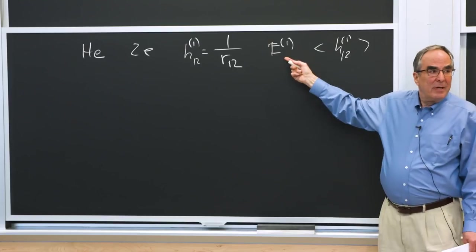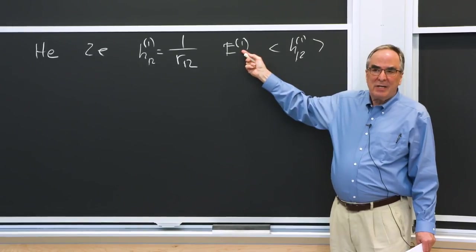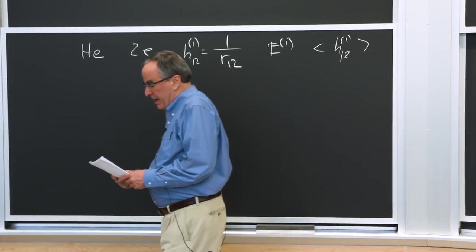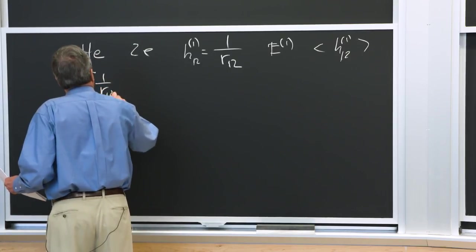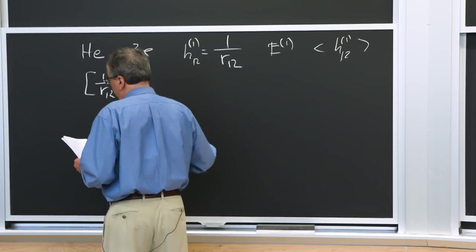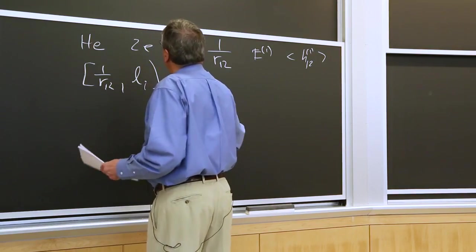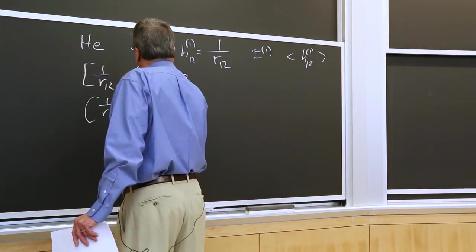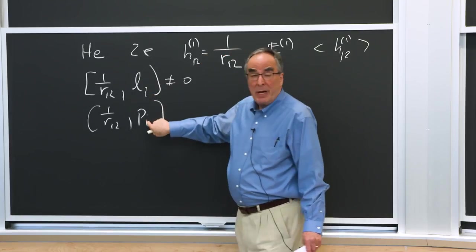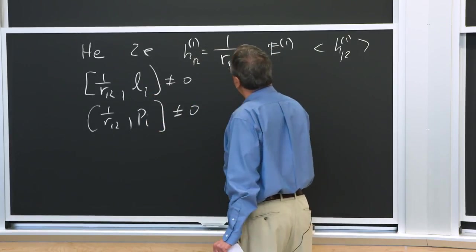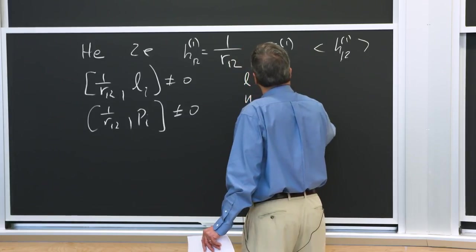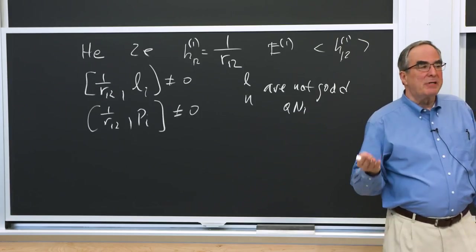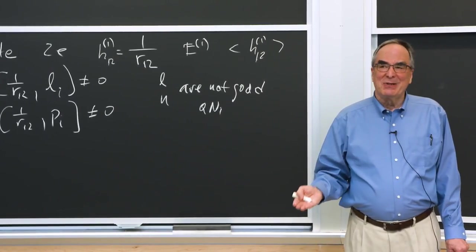So that's E1. And that's almost enough to give us a sense of what is going on. OK, 1 over r12 commutator with any electron, that's not 0. 1 over r12 commutator with any orbital angular momentum, any momentum is not 0. So that means that l and n are not good quantum numbers. What's a good quantum number? What's the definition of a good quantum number? Come on, this is an important question.